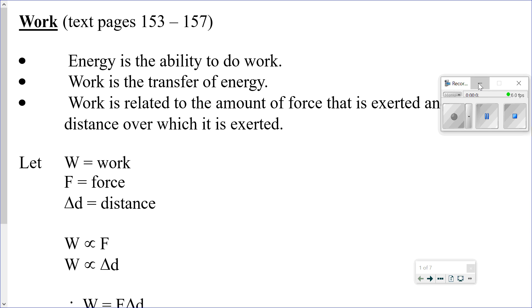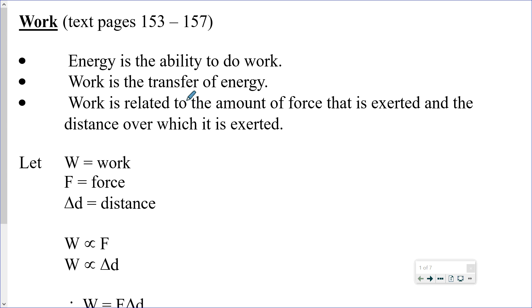Hello everyone, this lesson is going to be on work and its relationship with energy. We've talked about different kinds of energy: kinetic energy, potential energy, and subcategories like nuclear, chemical, gravitational potential energy, energy due to motion, mechanical energy, and thermal energy. Energy is the ability to do work, and work is the transfer of energy. If we take gravitational potential energy and use flowing water to turn a turbine, we have a transfer of energy and work has been done.